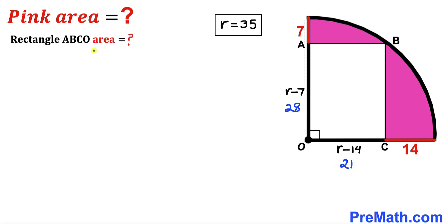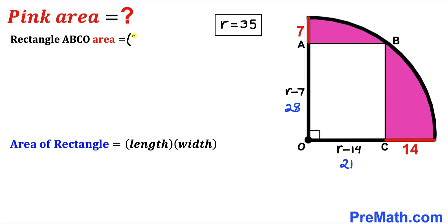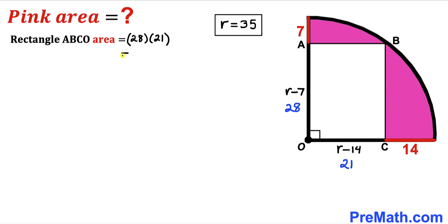Now we are going to calculate the area of rectangle ABCO. Recalling the formula: Area = length × width. In our case the length is 28 and the width is 21, so the area of this rectangle is 28 × 21 = 588 square units.